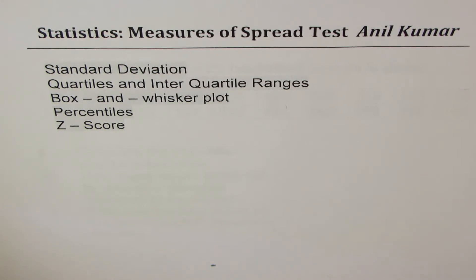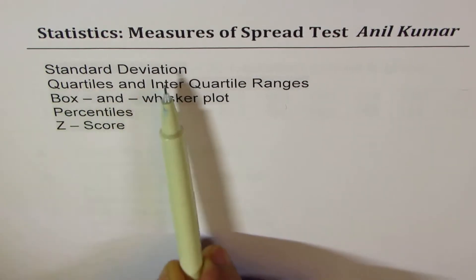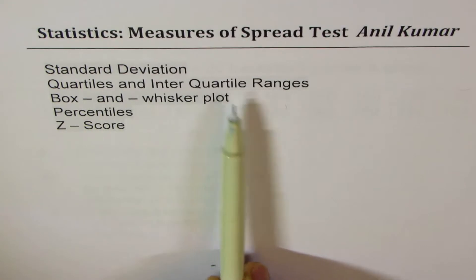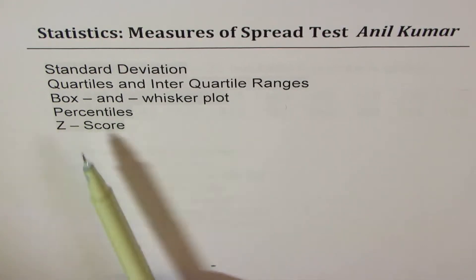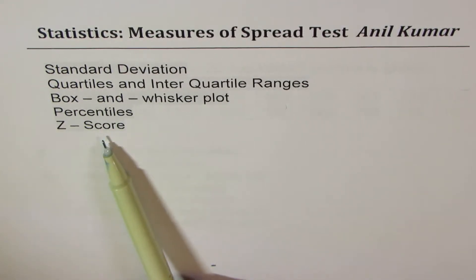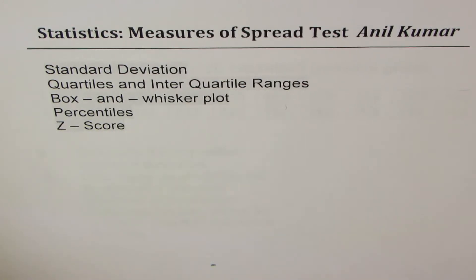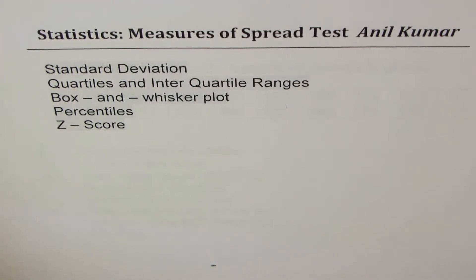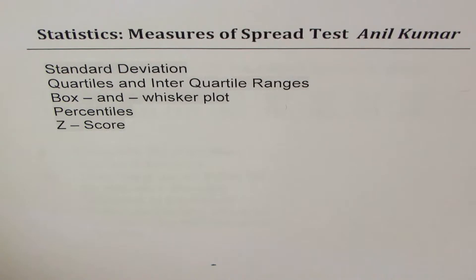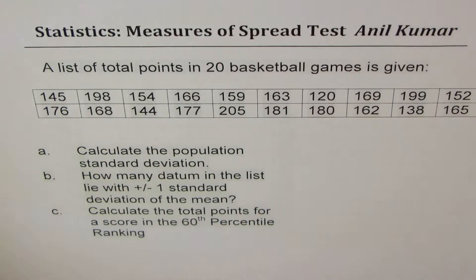On the very first page, I have written a few topics. We are going to discuss standard deviation, quartiles, interquartile range, box and whisker plot, percentiles, and z-score. You have already done mean, mode, and median in the previous unit. Now I'll take up examples from the previous test papers — some of them have been copied here as part of this video in this particular list.